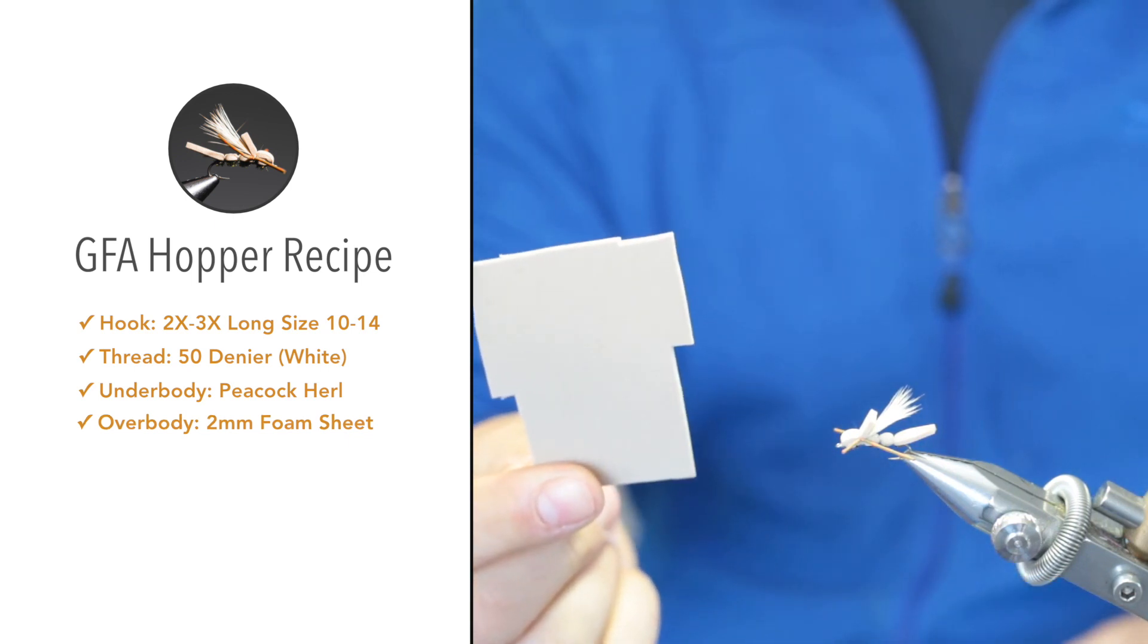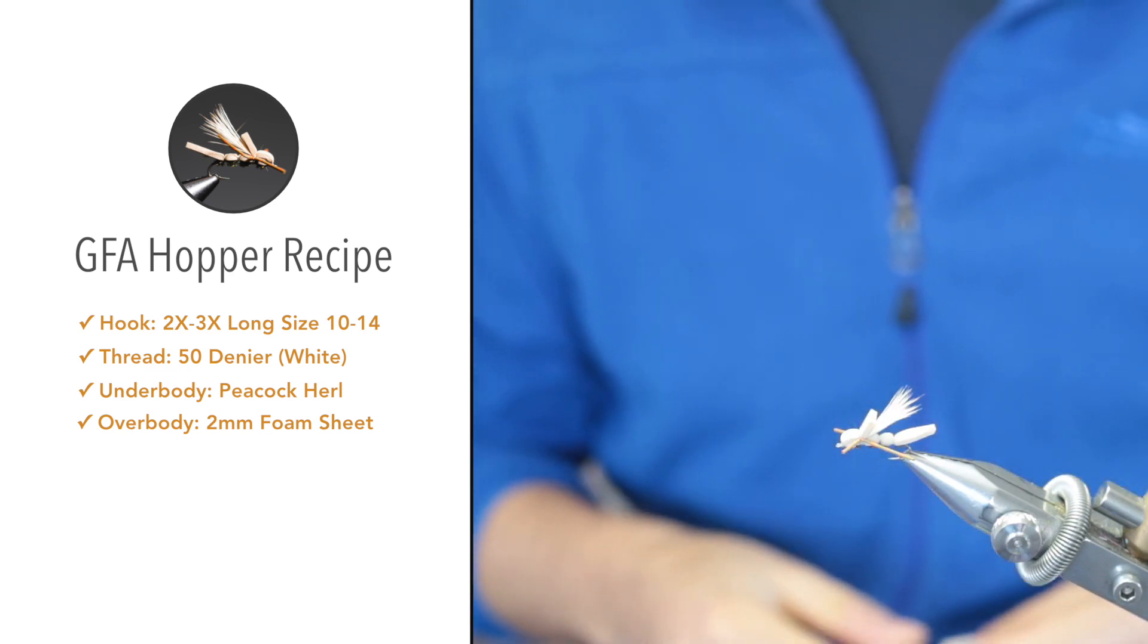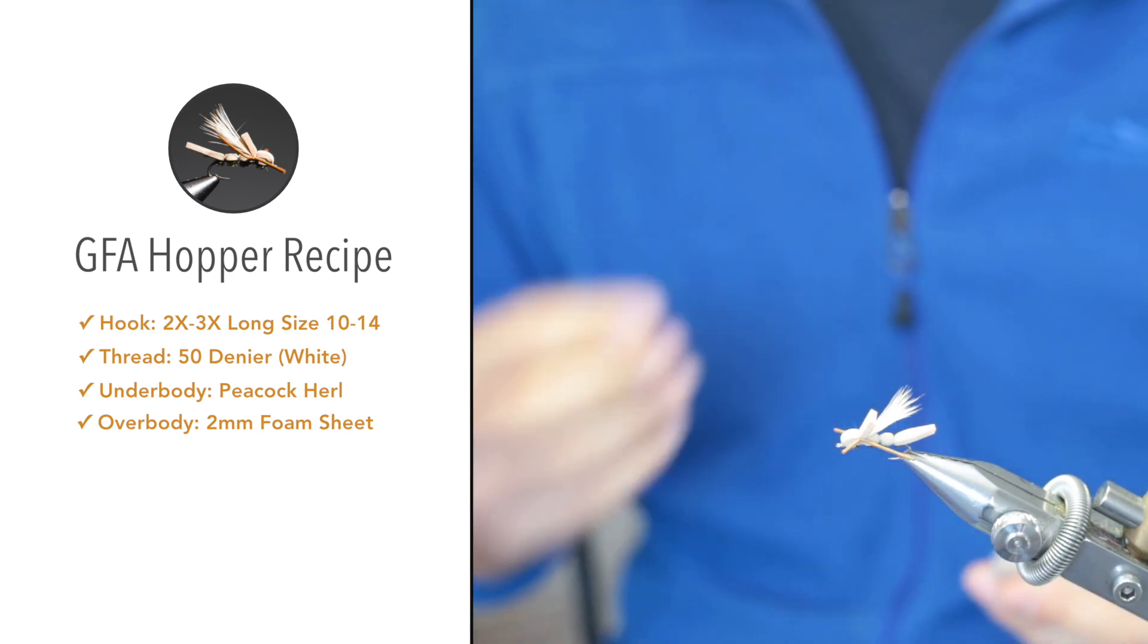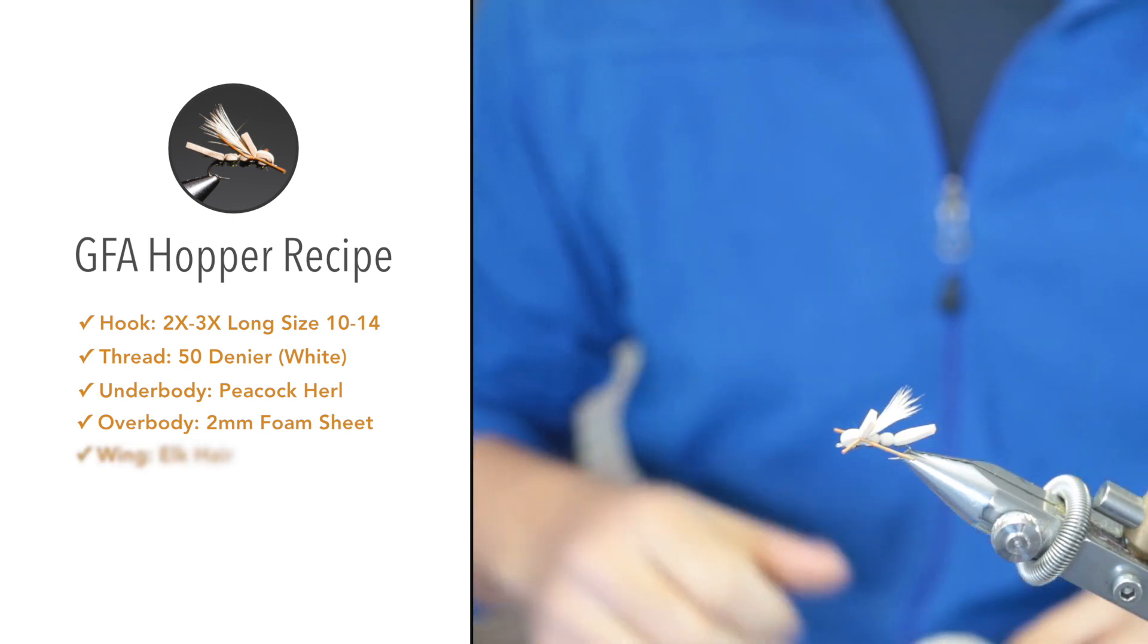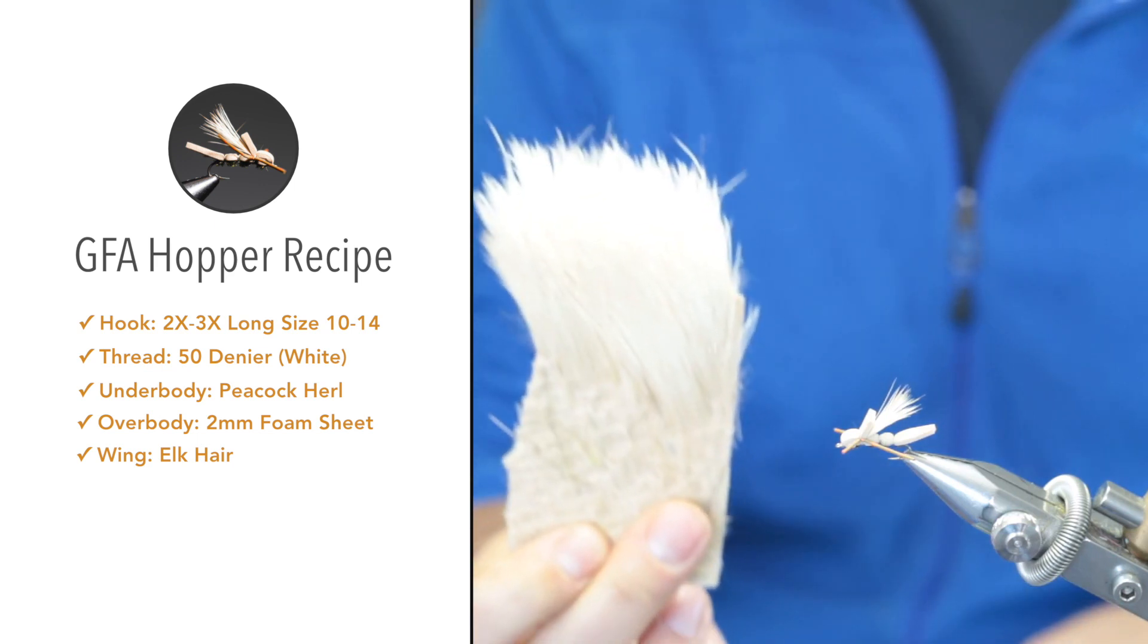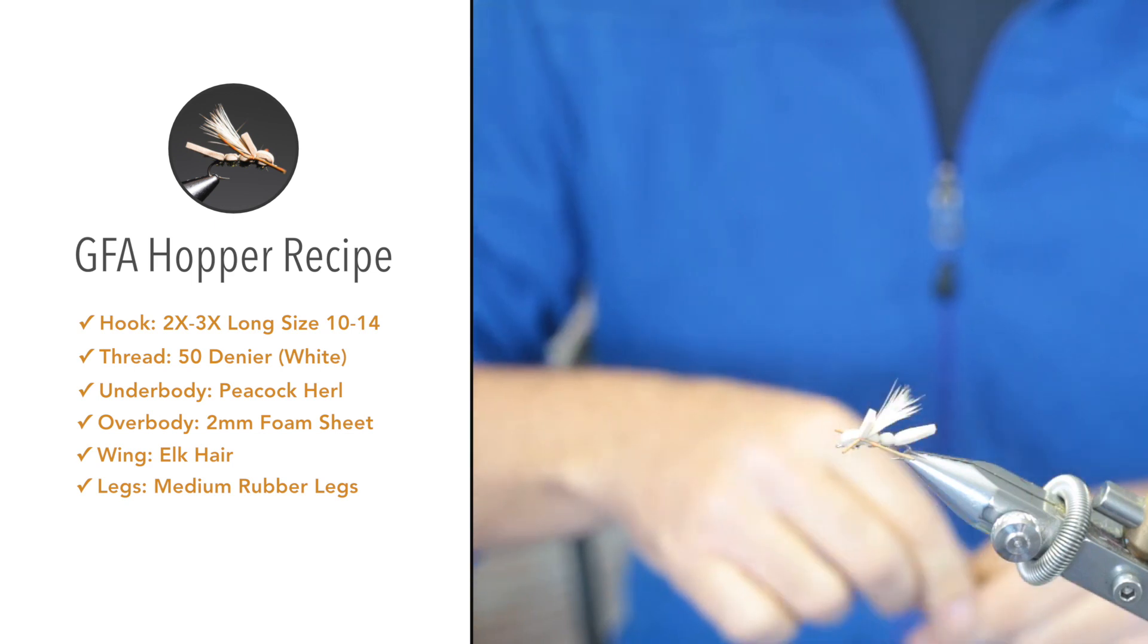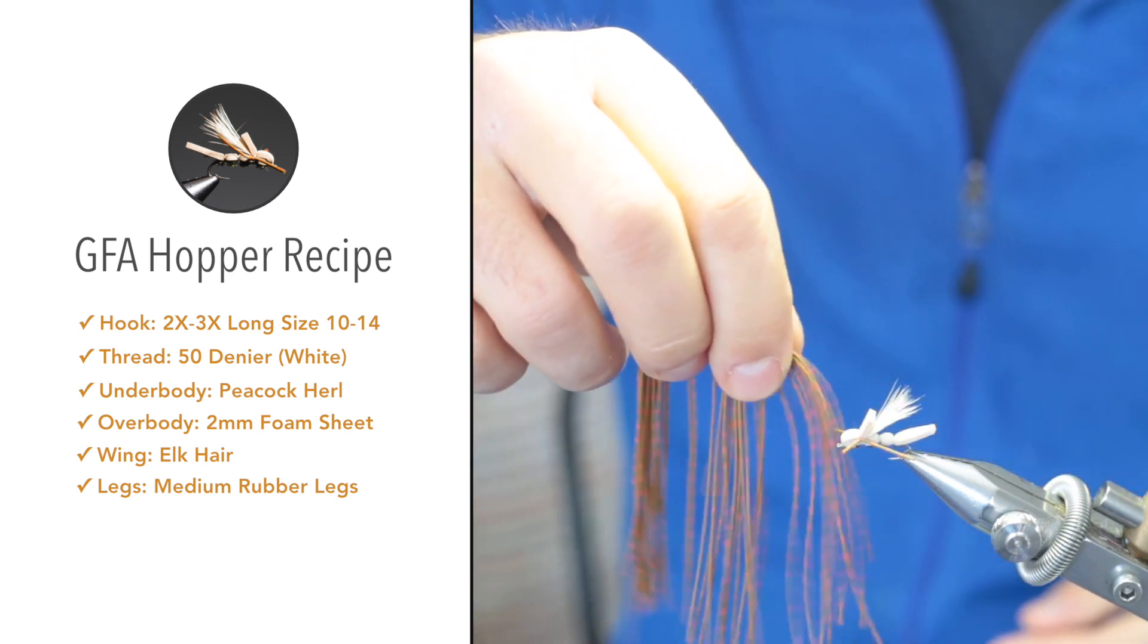For the overbody I'm using 2mm foam in tan. You can use any kind of foam to resemble many different species of hoppers, or you can even go for foam colors like dark purple or black to mimic crickets. For the wing I'm using bleached elk.